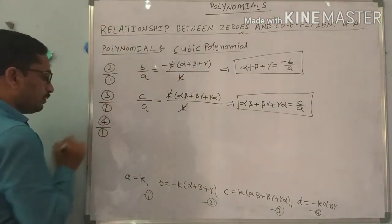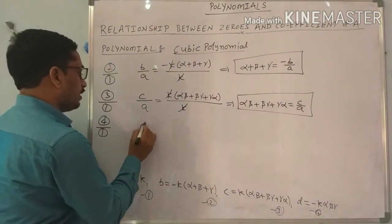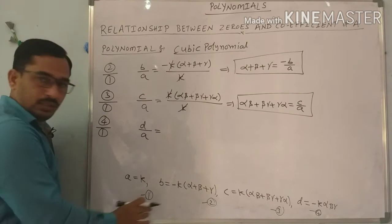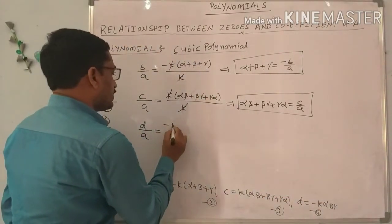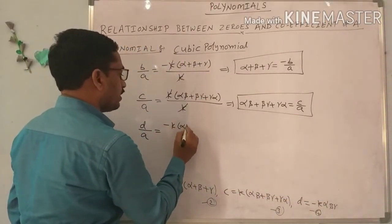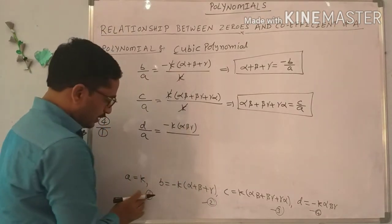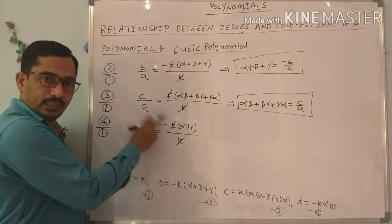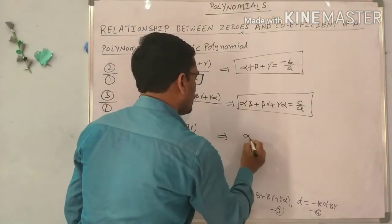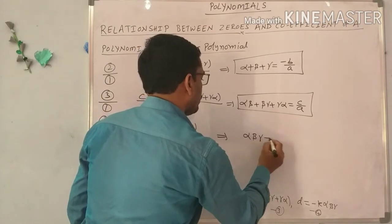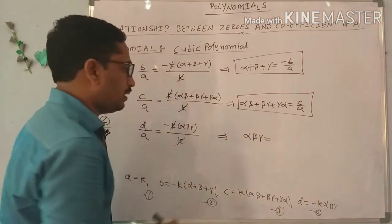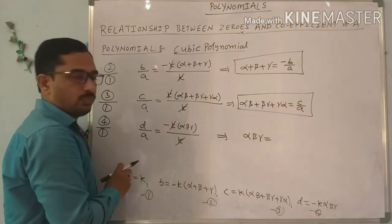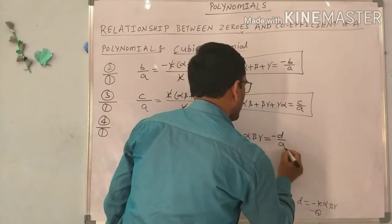Now equation 4 by equation 1: D by A equals minus K into alpha beta gamma divided by K. K cancels. Transposing the minus to the left side gives alpha into beta into gamma equals minus D by A. The product of all zeros of a cubic polynomial equals minus D by A.